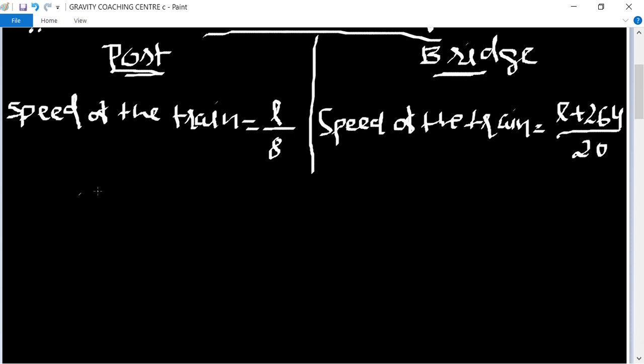So now speed in both the cases, speed of the train is same. So we can write L upon 8 equals L plus 264 upon 20. Now we cancel by 4: 4 into 8 and 4 into 20 gives 5.